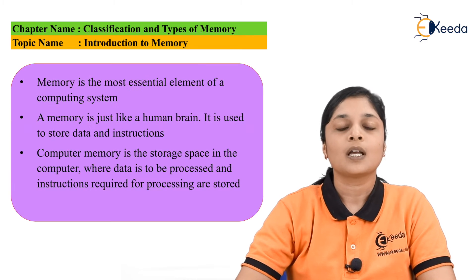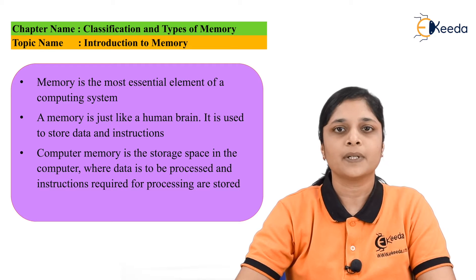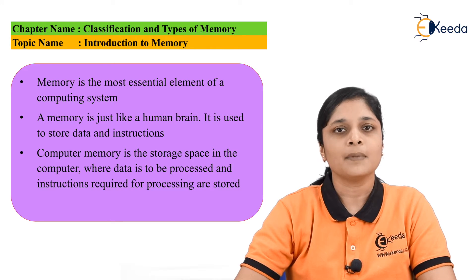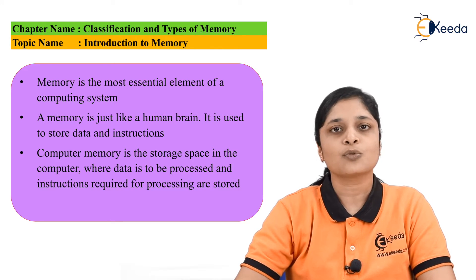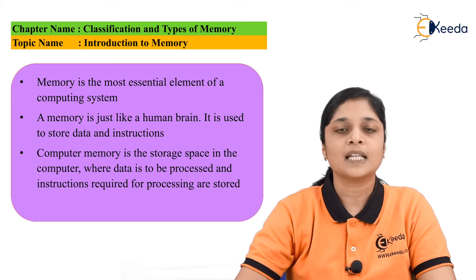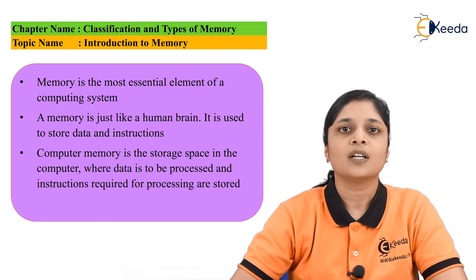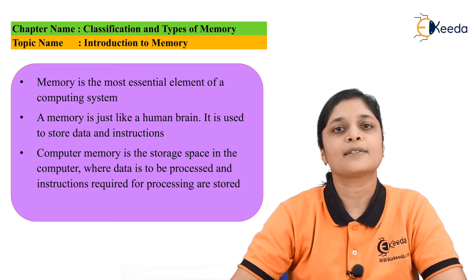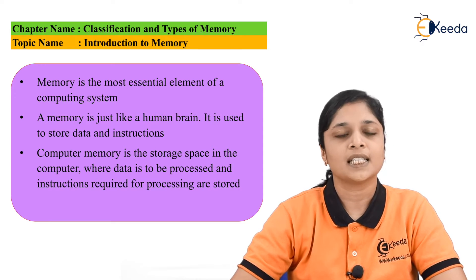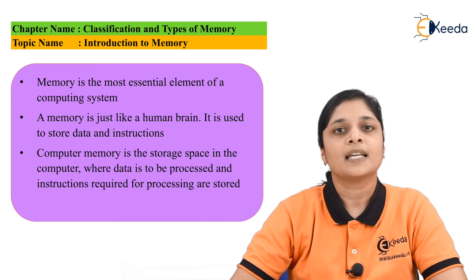Memory is the most essential element in a computing system. Memory is used to store the data and instructions. It is just like a human brain. Computer memory is used to store the data or the instructions.